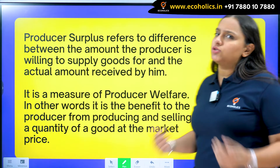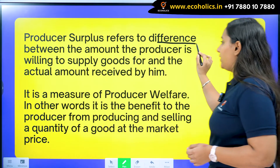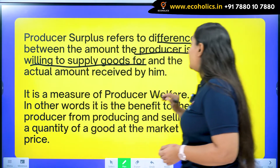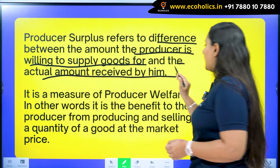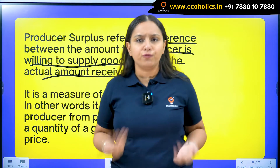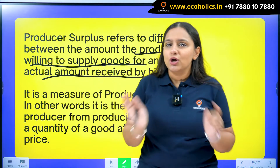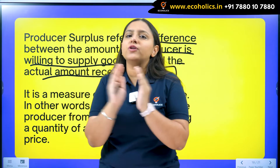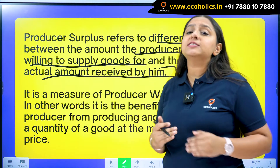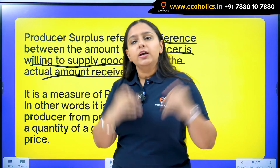So what is producer surplus? Producer surplus refers to the difference between the amount the producer is willing to supply goods for and the actual amount received by him. For example, if a producer wishes to charge 50 rupees for one good but is instead getting 80 rupees, that difference of 30 rupees is his producer surplus.